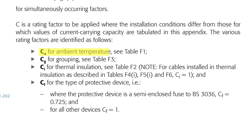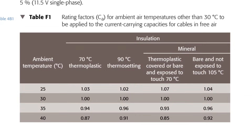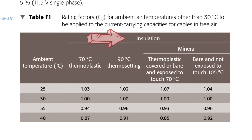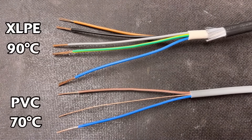CA is a factor we apply depending on the ambient temperature of the area the cable is installed in. We can find the numbers in table F1 of the on-site guide. As you can see, it's made up of five different columns in total. The first is the ambient temperature value, going up in fives from 25 degrees up to 40 degrees. The other columns relate to different types of insulation or cable — the first type is 70 degrees C thermoplastic, which is the insulation you find on PVC insulated twin and CPC cable.